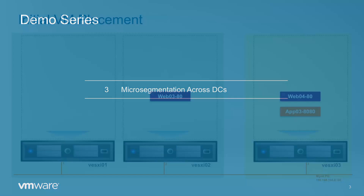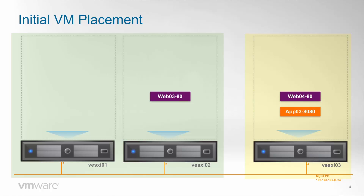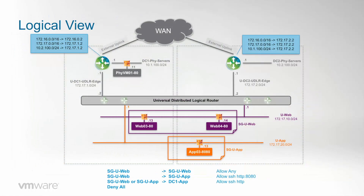We will use the same lab environment as in previous videos for this demo, but in this case we have one single VM on data center one and two VMs on data center two. We have one web subnet with web03 on data center one and web04 on data center two, and we have an app subnet with app03 on data center two. Since we have already played enough with the NSX firewall and the default rule in the previous video, we will go directly to the use case and enable several firewall rules that will filter traffic between our VMs.